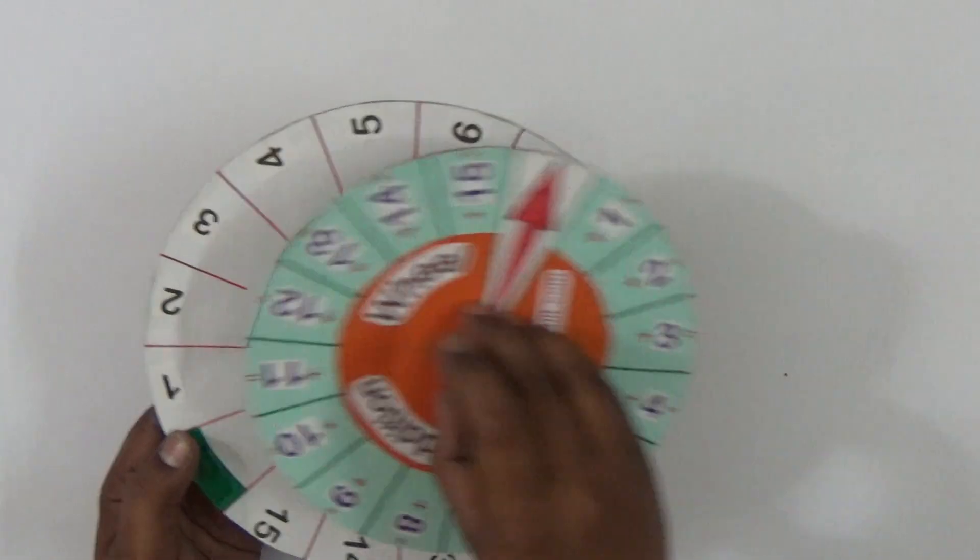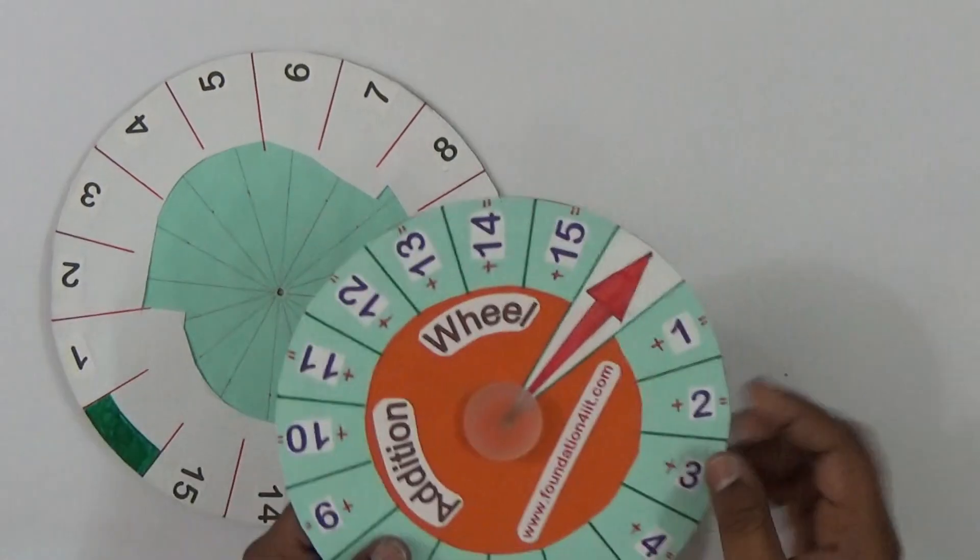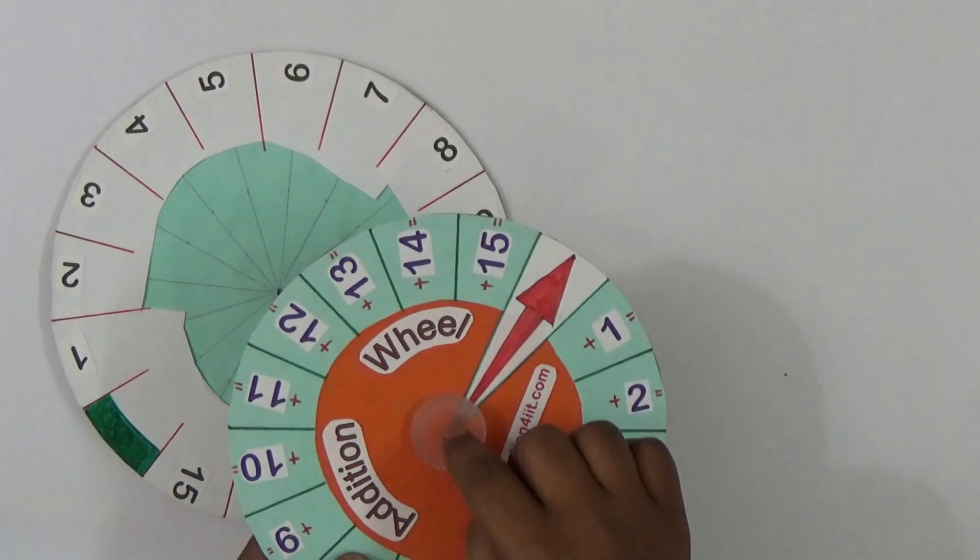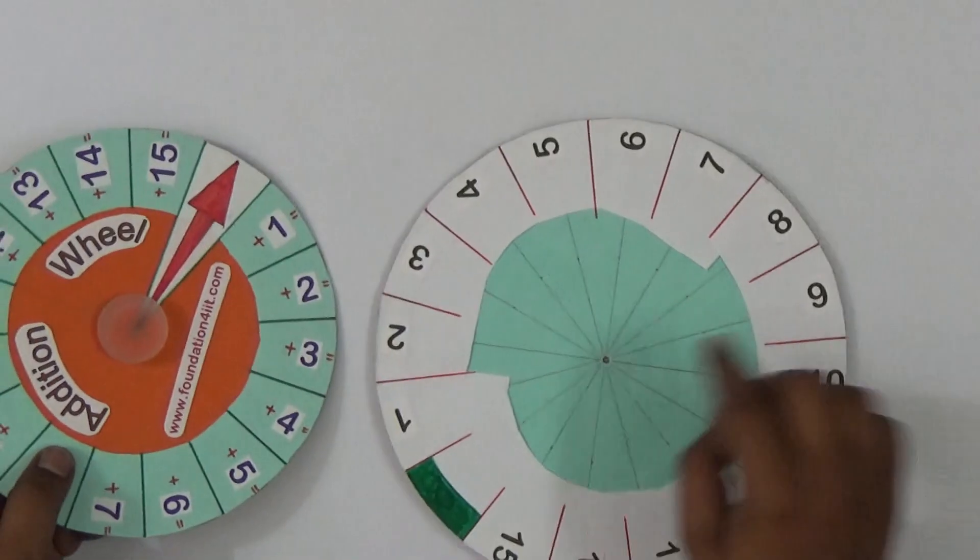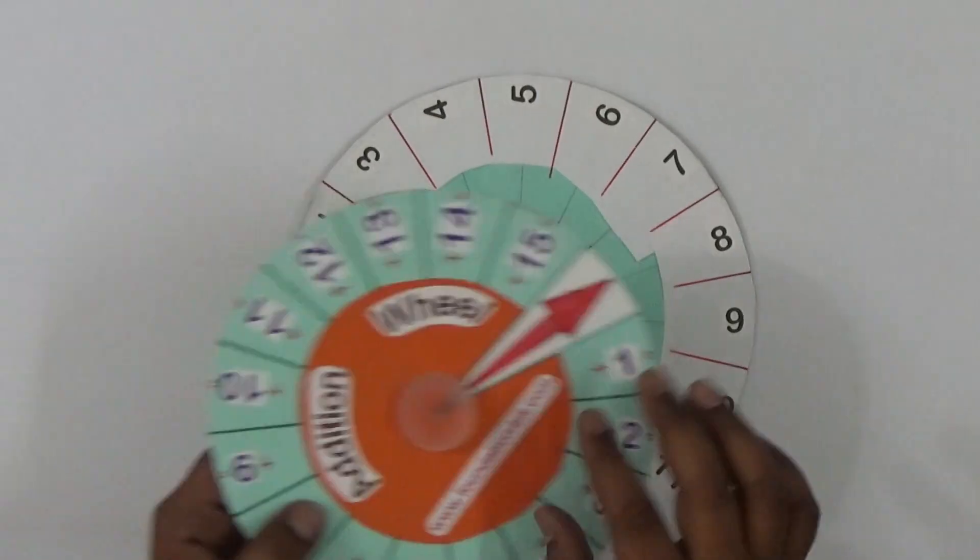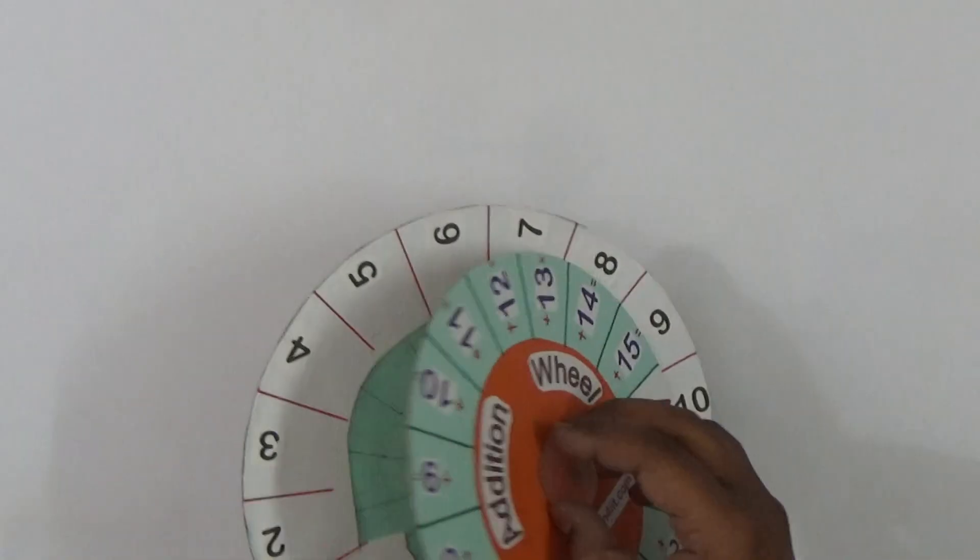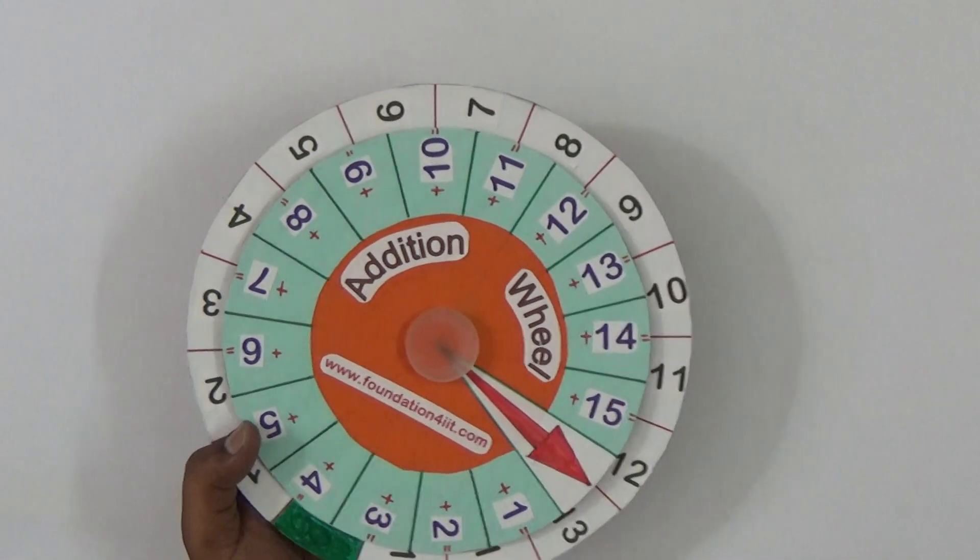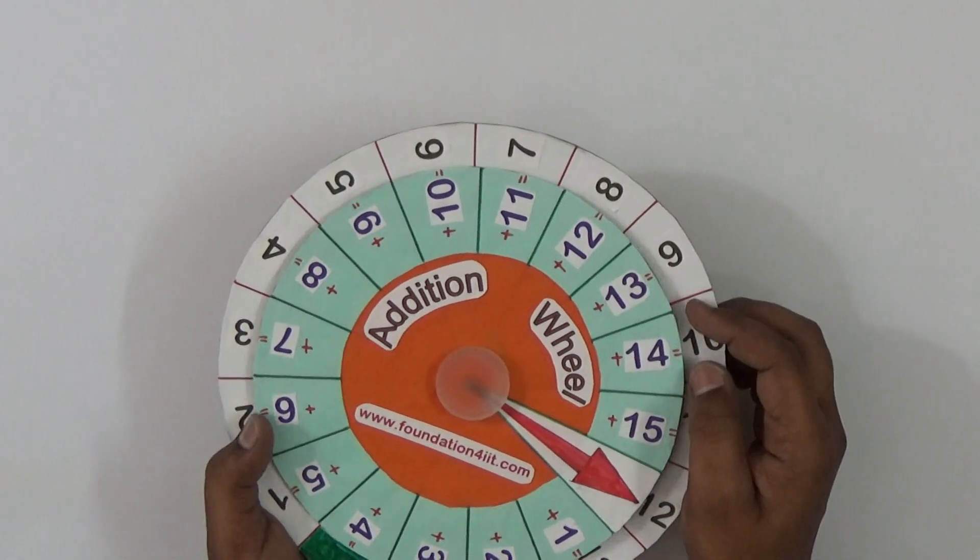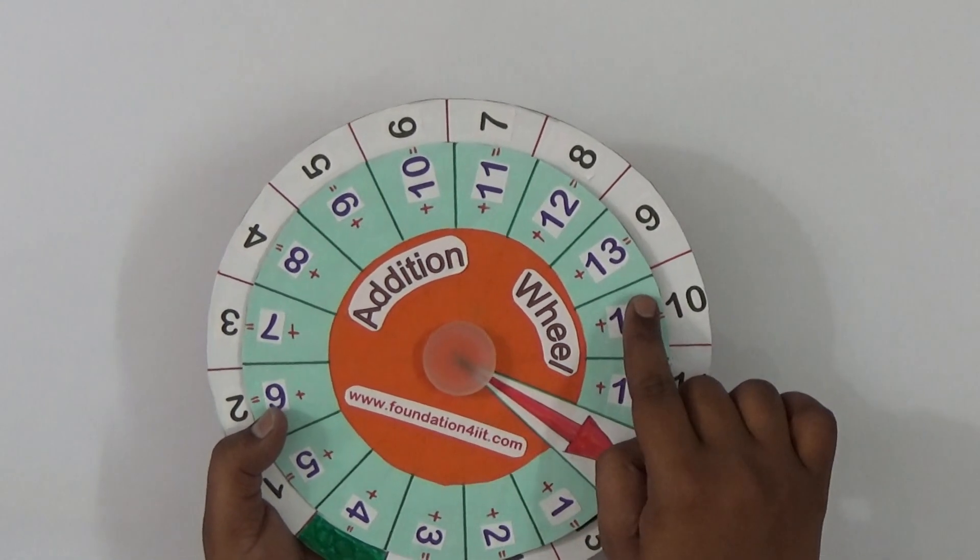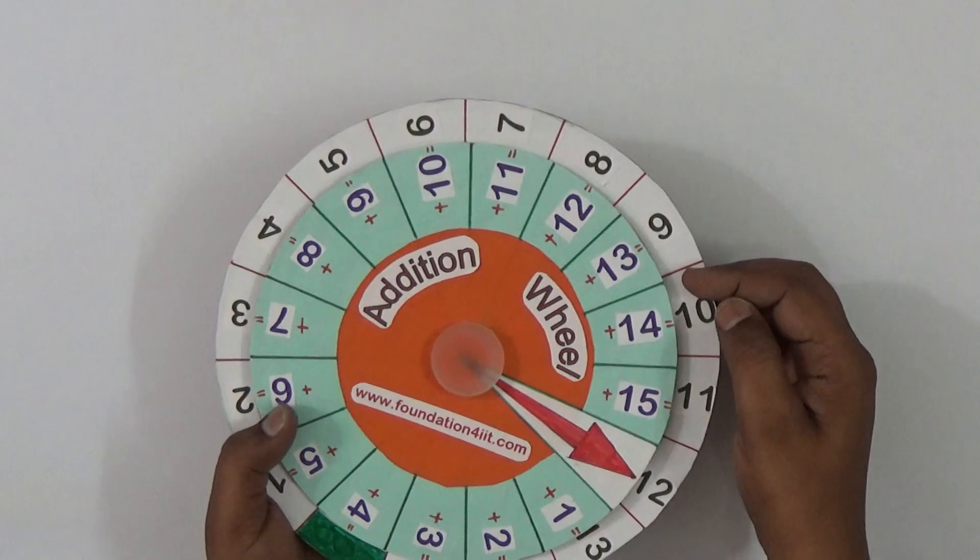also from here we should prepare the same. Okay, let's take and point out - just take two circular circles with different radius. If you took one at eight centimeters, take one or two centimeters more radius for the bigger circle. Now, this is a simple addition wheel we can make.